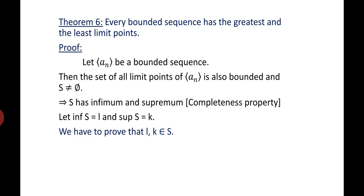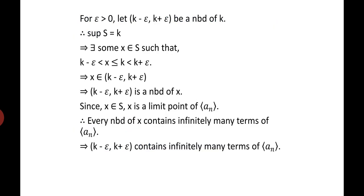We have to prove that L and K belong to S. For epsilon > 0, let (K - epsilon, K + epsilon) be a neighborhood of K. Since supremum of S = K, there exists some element X ∈ S such that K - epsilon < X ≤ K < K + epsilon. This means X is an element of (K - epsilon, K + epsilon).